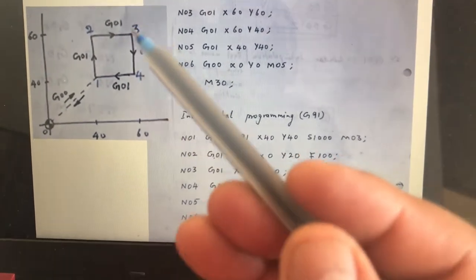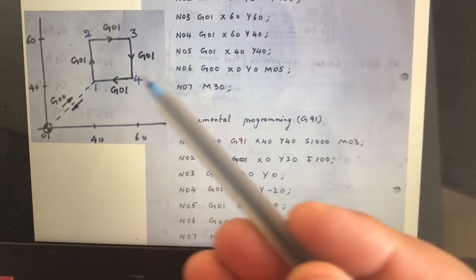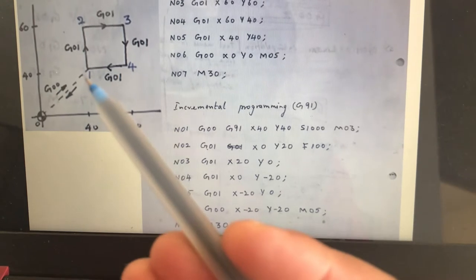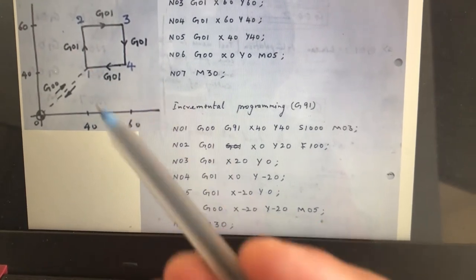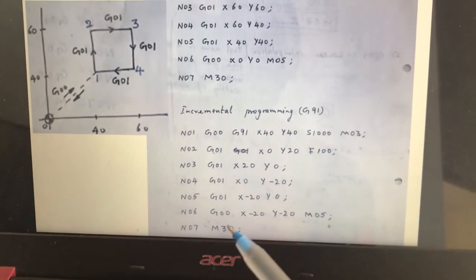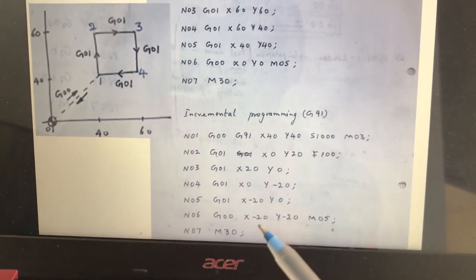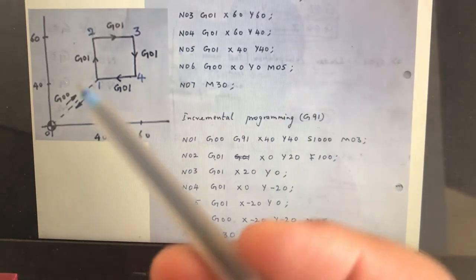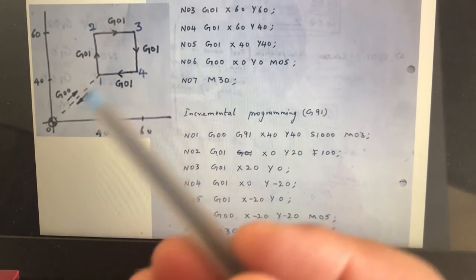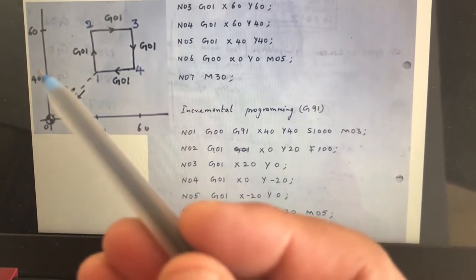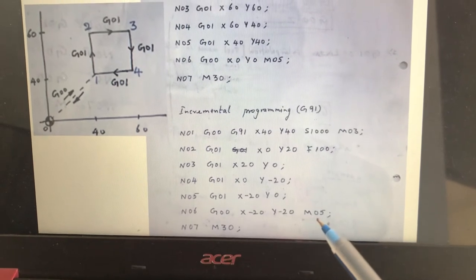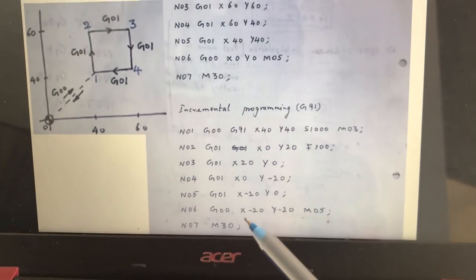Here, point number 4, X is 0, Y is minus 20. And point number 1, X is minus 20, Y is 0. And then finally, go back to this point. G00, X minus 20, Y minus 20. From here, it is coming down to this point. This is taken as 0, 0 and come back. In minus direction, minus 20. This is also minus direction, minus 20. And then M05, same. M30, same.